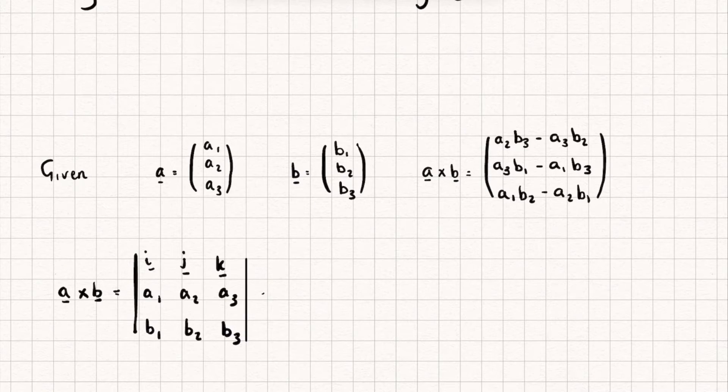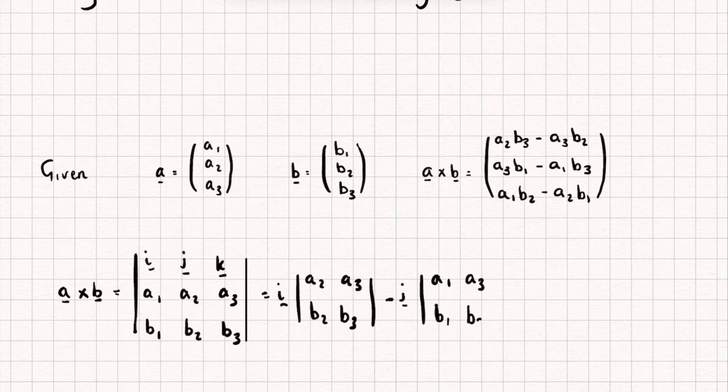Let's now calculate this determinant. So it's going to be i multiplied by the determinant of [a₂, a₃; b₂, b₃], minus—remember minus—j multiplied by the determinant of [a₁, a₃; b₁, b₃], plus k multiplied by the determinant of [a₁, a₂; b₁, b₂].